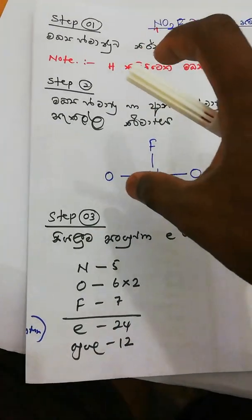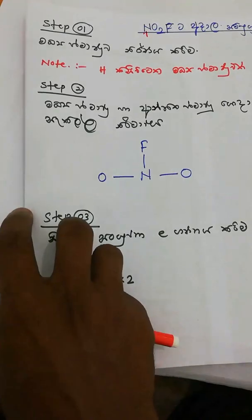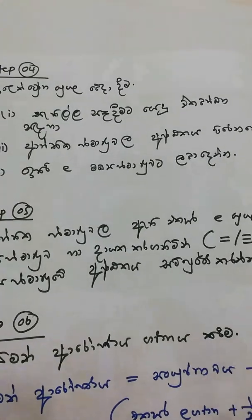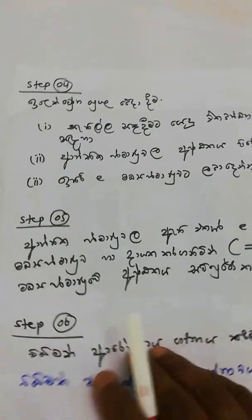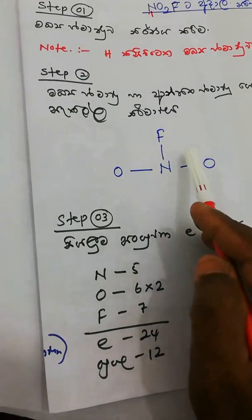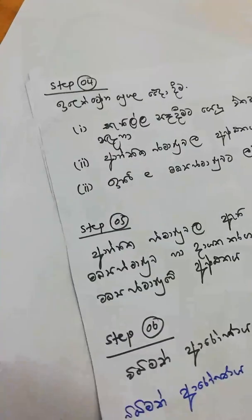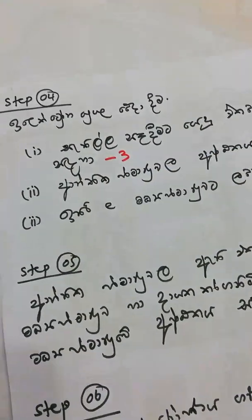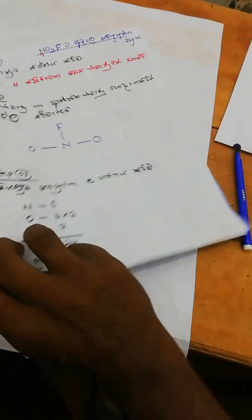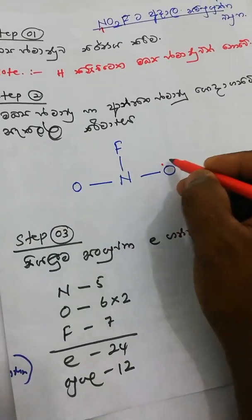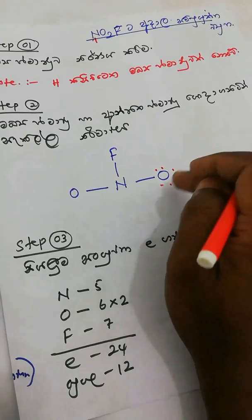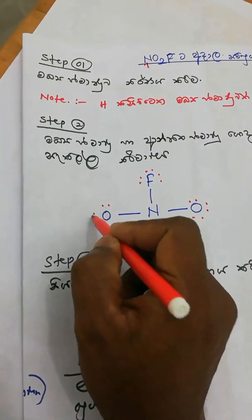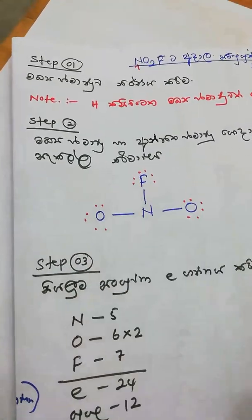The electron is very different. The electron is very high, and in the same way, the electron is very high.